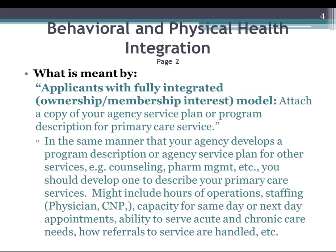The first question we've gotten is what is meant by applicants with a fully integrated ownership or membership interest model being asked to attach a copy of your agency service plan or program description for primary care services. This is really similar to any other types of documents or descriptions you do for services such as counseling or CPST. You might put in your hours of operation, describe in broad detail your staffing model, capacity for same-day appointments, next-day appointments, acute and chronic care. It's basically a description of the primary care services your organization has provided.